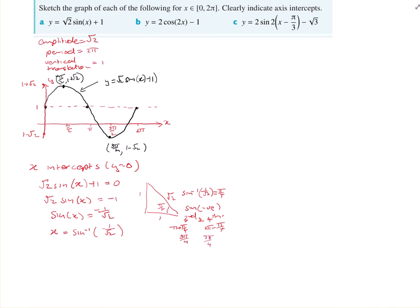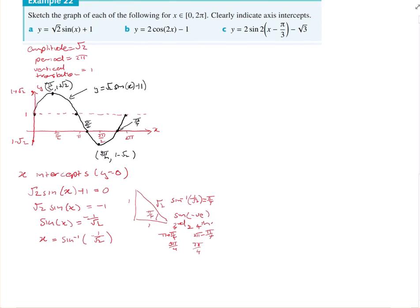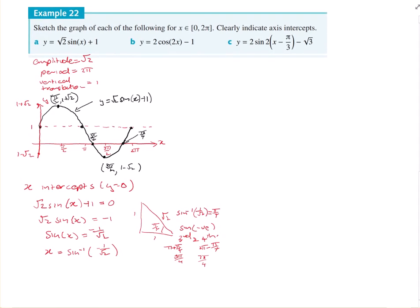So come back and mark in those x-intercepts: 5 pi on 4 and 7 pi on 4. That gives you the intercepts. I won't do Example B because it's very similar — just done on a cosine one. Let's do Example C though, because that looks a bit more complicated and is probably worth doing. So: y equals 2 sine 2(x minus pi on 3) minus root 3 — there's quite a bit going on in this one.